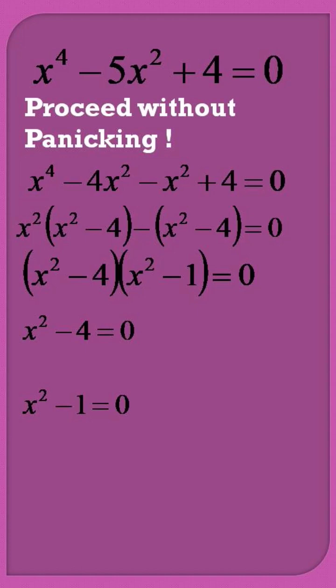x square minus 4 is equal to 0 results into two values of x, that is x is equal to plus minus 2, and x square minus 1 results into another two values of x, those are x is equal to plus minus 1.